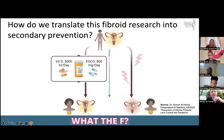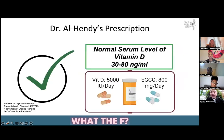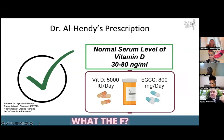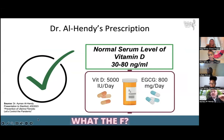What we have found through a lot of research is using 5,000 international units of vitamin D every day, which is over the counter — you don't need a prescription — and the EGCG, a specific extract of green tea. The active ingredient in green tea is called EGCG, or epigallocatechin gallate. Using 800 milligrams of that per day together can prevent the progression of the disease or recurrence of fibroids after myomectomy.